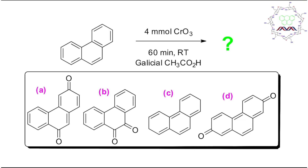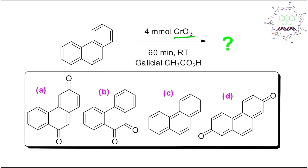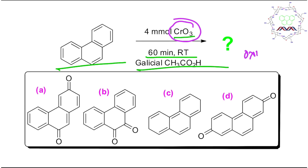As usual, I first request you to read the question again. This is an aromatic moiety named phenanthrene. It is reacted with chromium trioxide at room temperature for 60 minutes in glacial acetic acid. From this reaction condition, you can understand that chromium trioxide in acetic acid medium is an oxidizing agent, so this is actually an oxidation reaction.